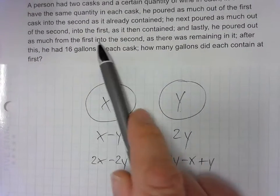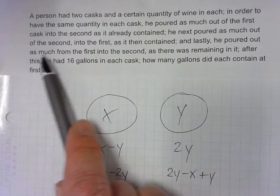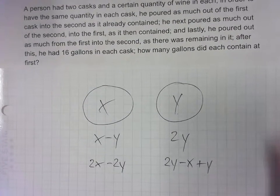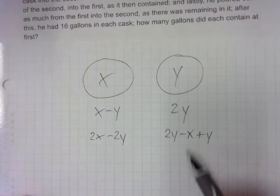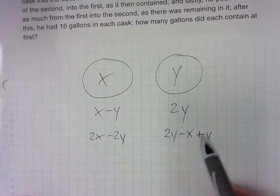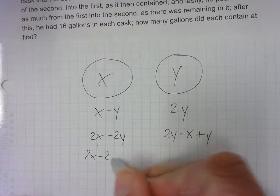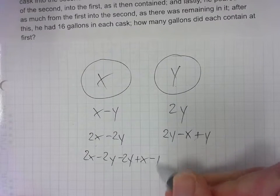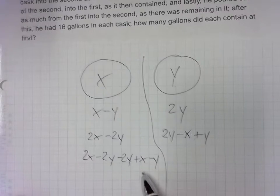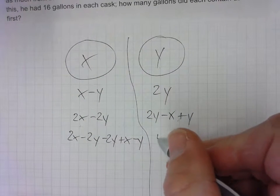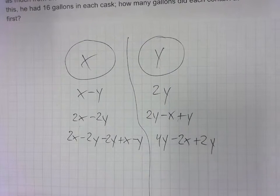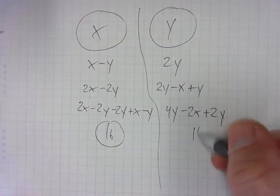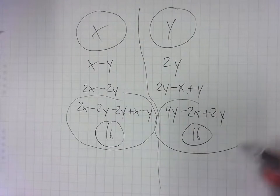Okay. And lastly, then we do the same thing over again. And lastly, he poured as much from the first into the second as there was remaining in it. All right. So now we're going to take this out of here, which will double this. So we have 2X minus 2Y, taking out a 2Y, taking out an X, which is negative. It's really like plus X and then subtracting Y. Okay. So let me draw my little line here. And then that doubles this. So this is now 4Y minus 2X plus 2Y. And there's going to be 16 gallons in each. So this will be equal to 16 now, and this will be equal to 16. So now there's 16 gallons here and 16 gallons here in this cask.